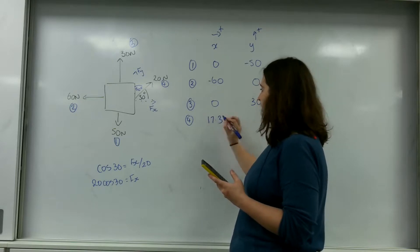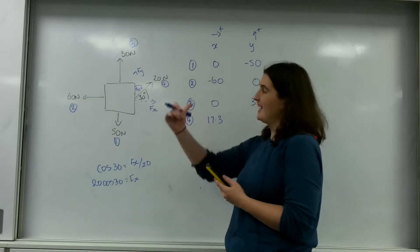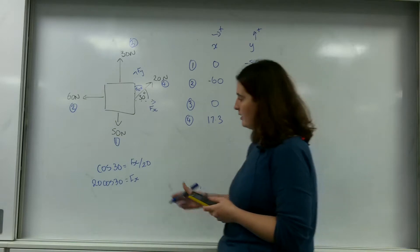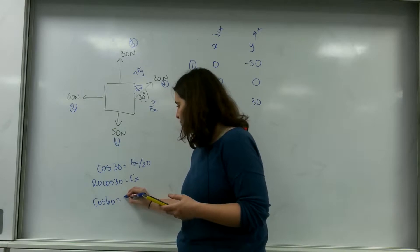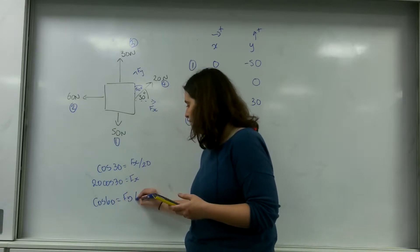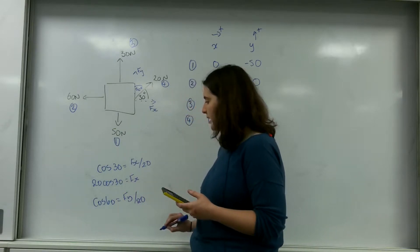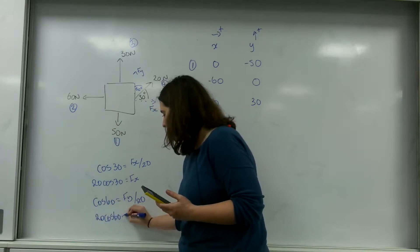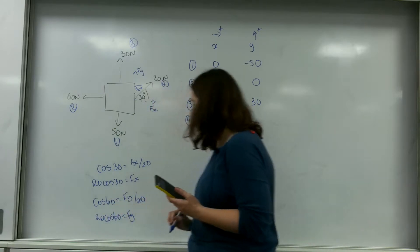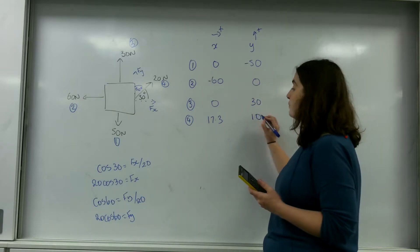So 20 cos 60 equals fy over 20. So 20 cos 60 equals fy, and that equals 10.